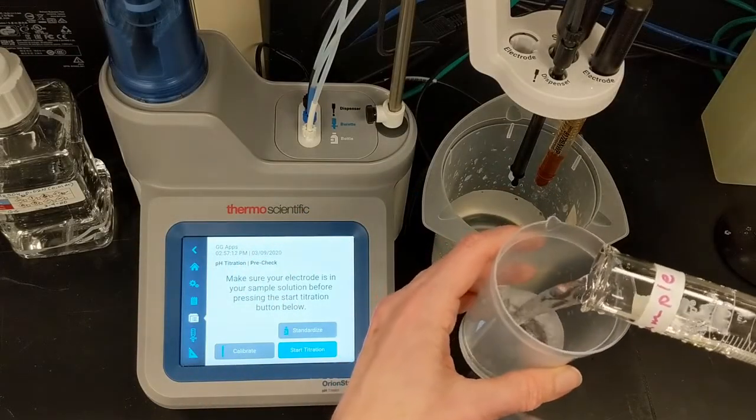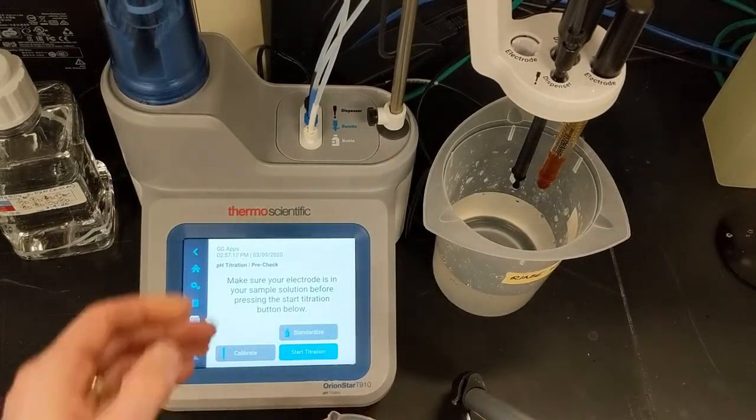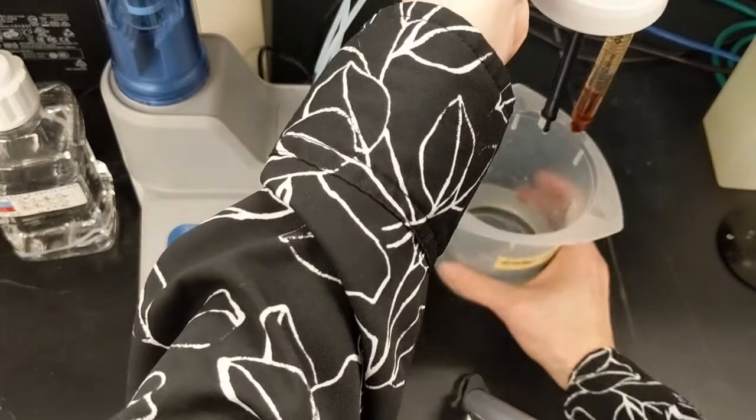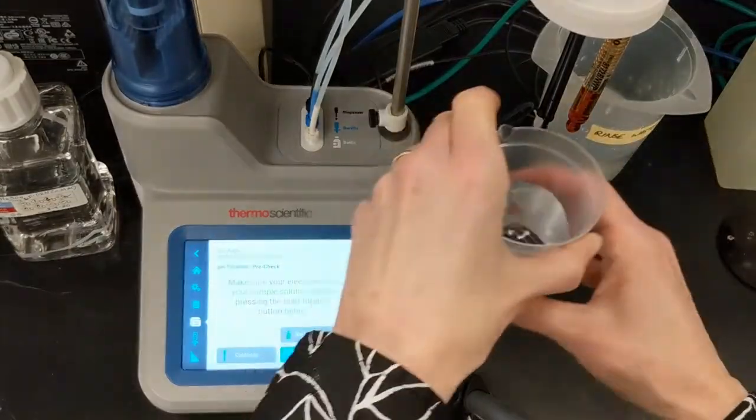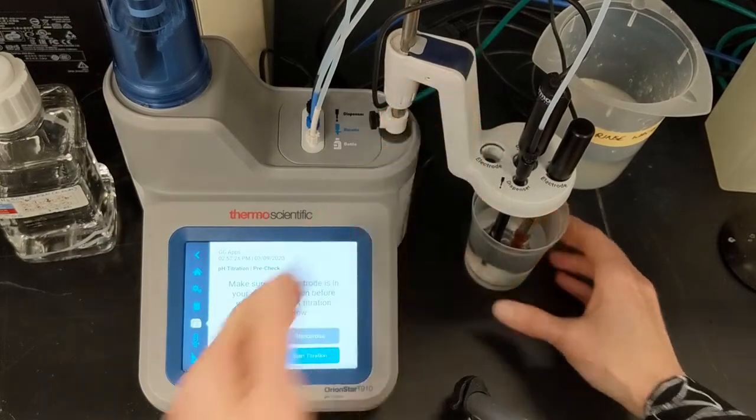I measure 100 ml of the sample in a graduated cylinder and transfer to a clean beaker. I'll lower the holder into the solution and select Start Titration from the Titration PreCheck screen.